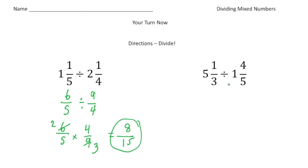Alright, the second one we had five and a third divided by one and four-fifths. So again, step number one is make both fractions improper.